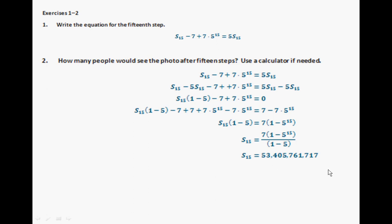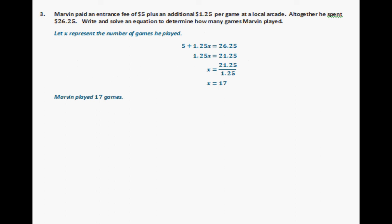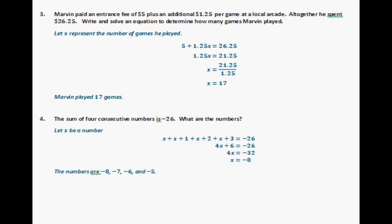So that's how many people would see your photo. For exercise 3, x is 17. For exercise 4, the answer is negative 8, negative 7, negative 6, and negative 5. Notice that you start with one number, and if they're consecutive, you're just taking that number and adding 1, then 2, then 3.